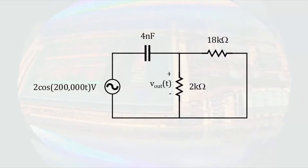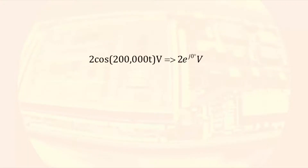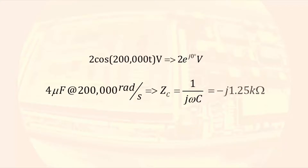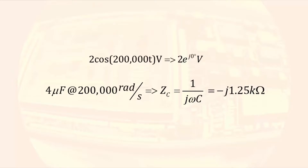The sinusoidal source has no phase angle associated with it, so taking it to the phasor domain consists of writing the magnitude as a phasor with a 0 degree phase angle. The capacitor in the phasor domain becomes an impedance of 1 over jωC. A capacitor of 4 microfarads with an angular frequency of 200,000 radians per second results in an impedance of -j1.25 kilohms. Here is the circuit in the phasor domain with the phasor voltage VO being the voltage across the 2 kilohm resistor.